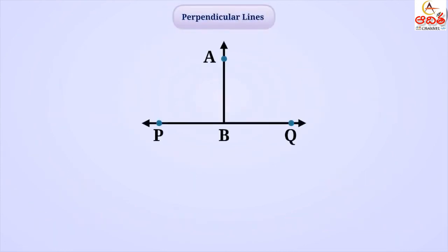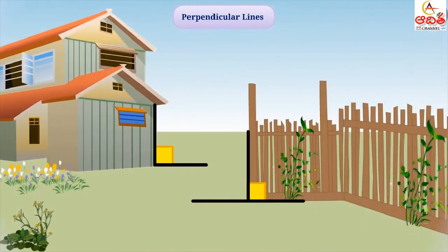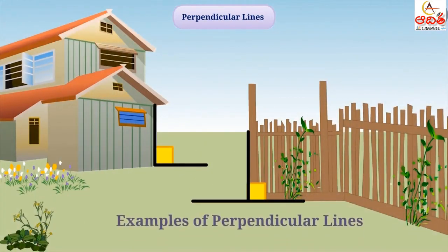Consider that two lines are intersecting each other at 90 degree angle. Such lines are called perpendicular lines. We write it like this: AB perpendicular to PQ and read it as line AB is perpendicular to line PQ. Some more examples of this are as follows.